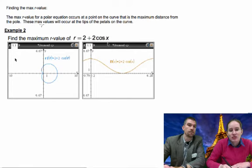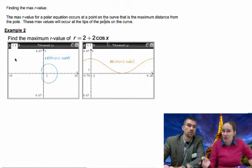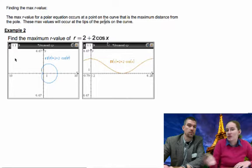So, it says here the max R value for a polar equation occurs at a point on the curve that is the maximum distance from the pole. These max values will occur at the tips of the pedals on a curve, or this is not really the same kind of curve.